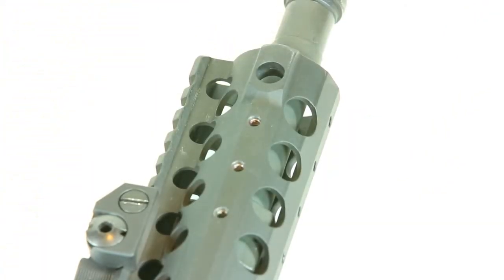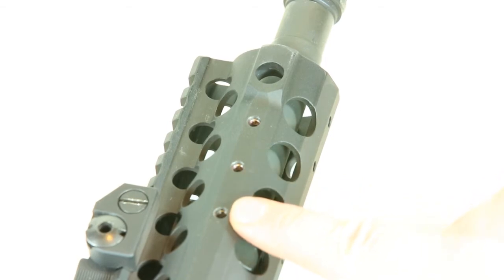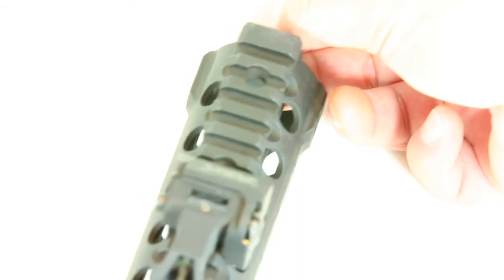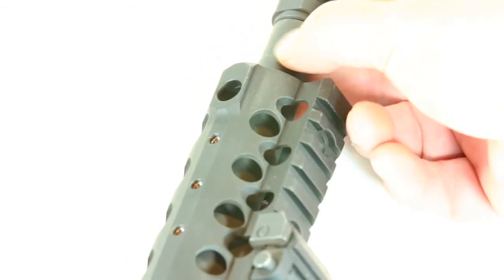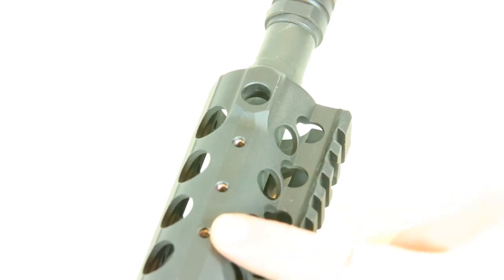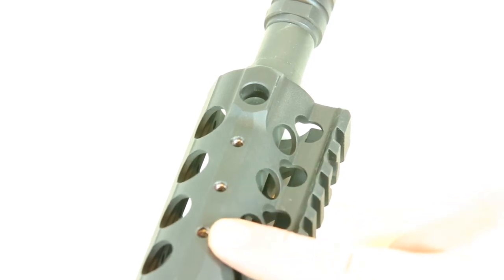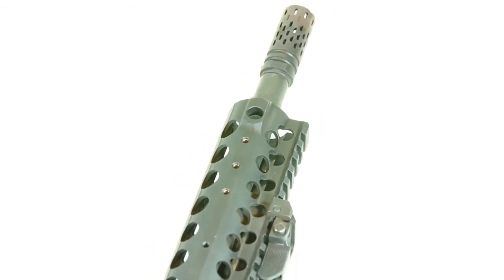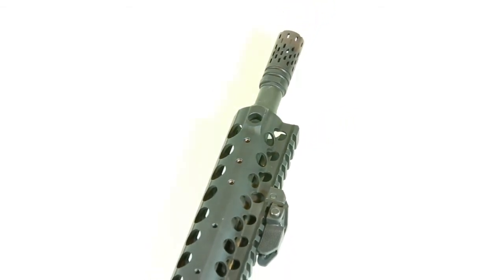So let's talk specifically about the Centurion Arms CMR rail and its mounting areas. The front of the rail at the three and nine o'clock positions has three interspersed holes on each of the sides that have steel inserts.